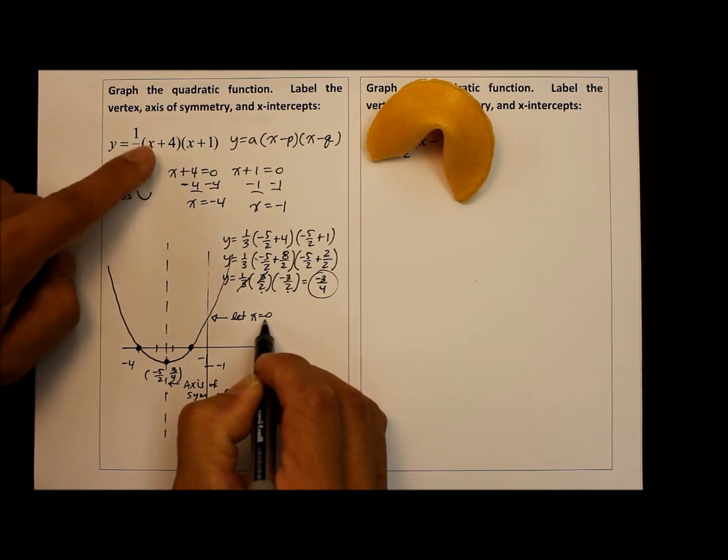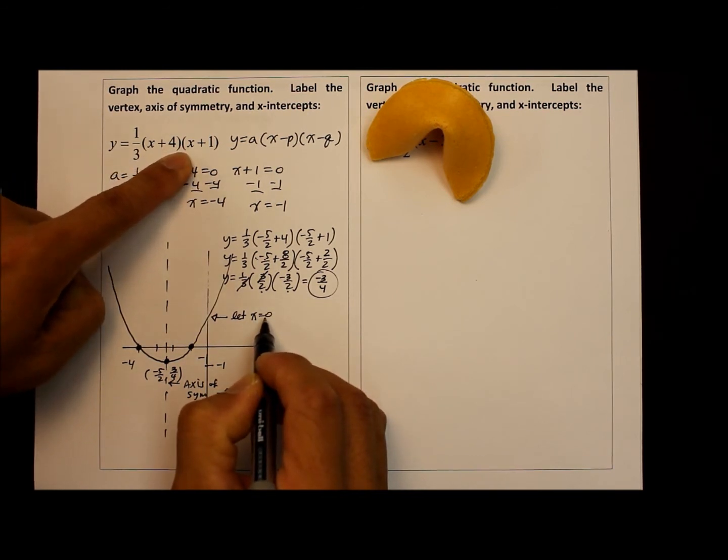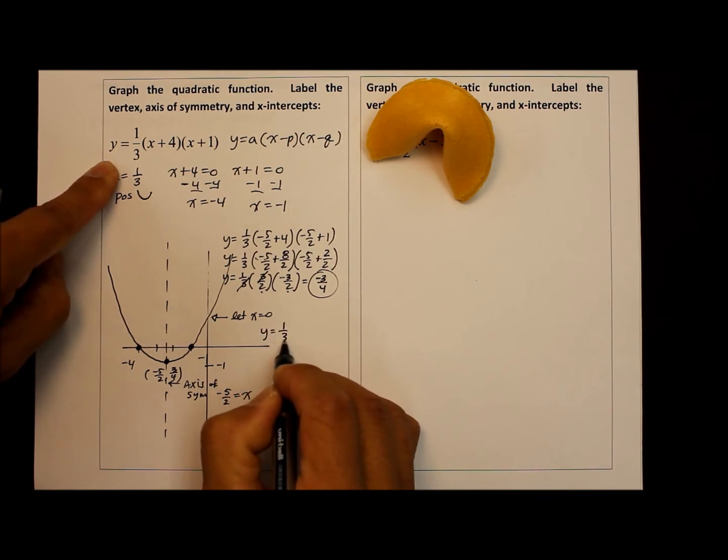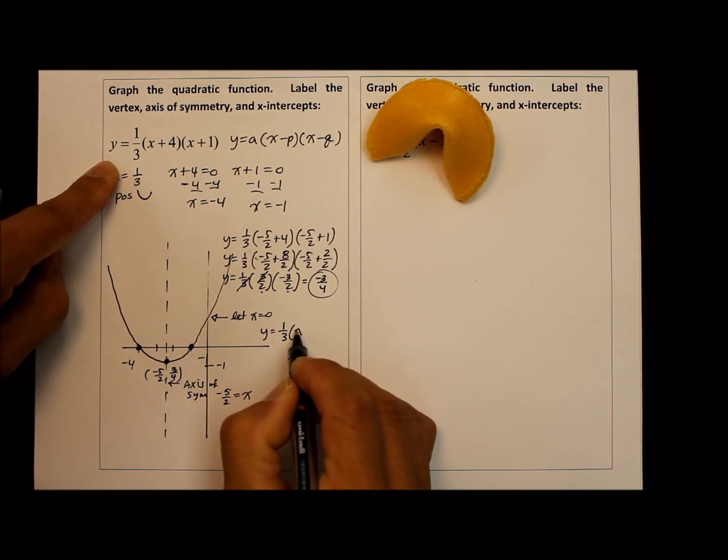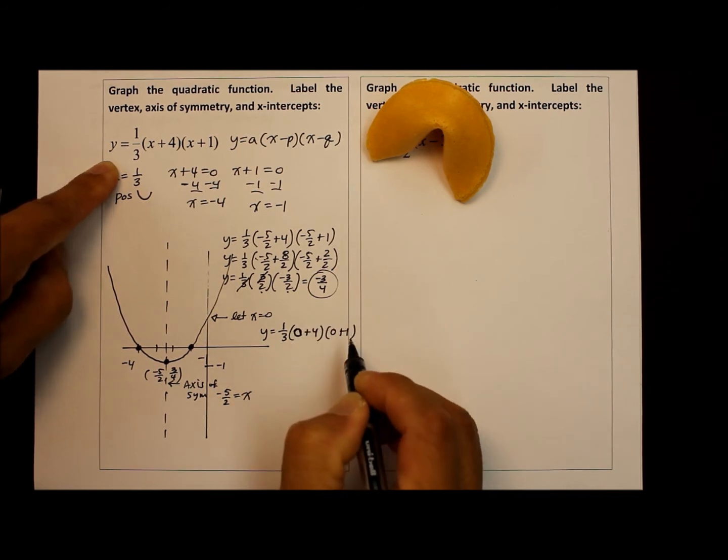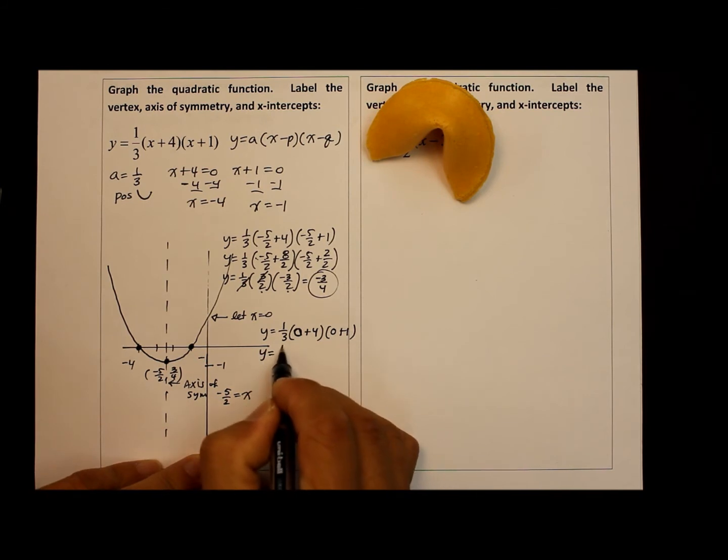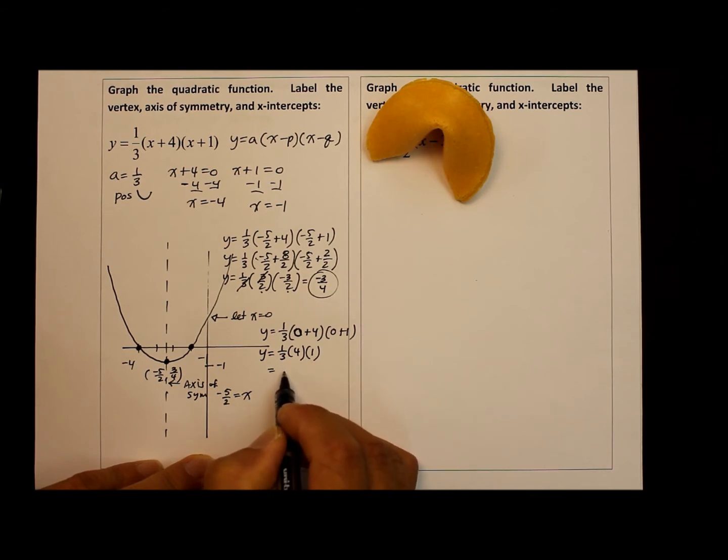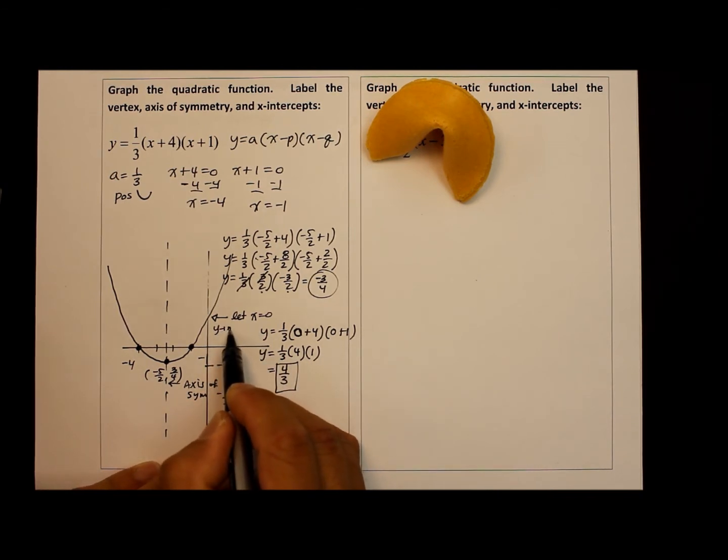And we're going to substitute the x back into the original function to find the y. So y equals one-third times x, which is zero, plus four, times zero plus one. Evaluate further. We get four times the one. So the y-value or the y-intercept is actually four over three. So the y-intercept is four over three.